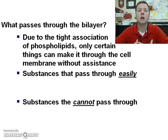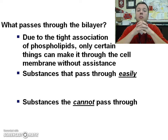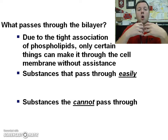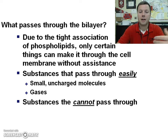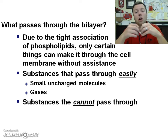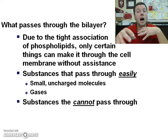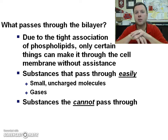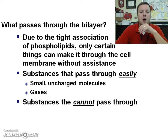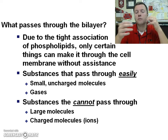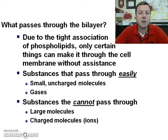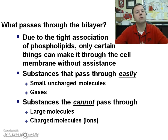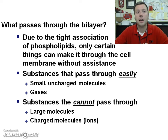So what passes through? Due to the tight association of those phospholipids, only certain things can make it through the cell membrane without assistance. Things that pass through easily are small, uncharged molecules like gases — mainly carbon dioxide and oxygen, things involved in cell respiration. Substances that cannot pass through are things that are large or charged. That doesn't mean they can never get through; they just can't do it on their own. They have to find an alternate route such as a channel protein, carrier protein, or a pump.